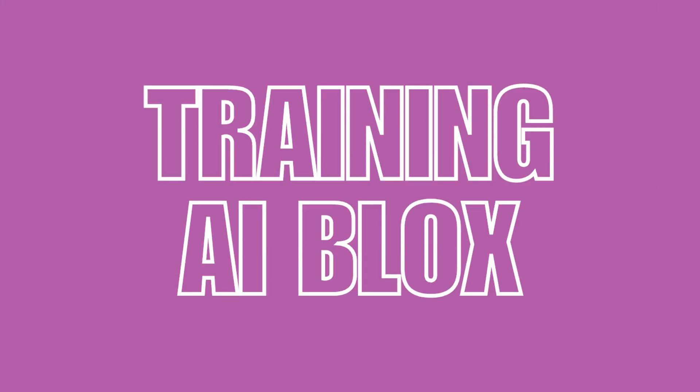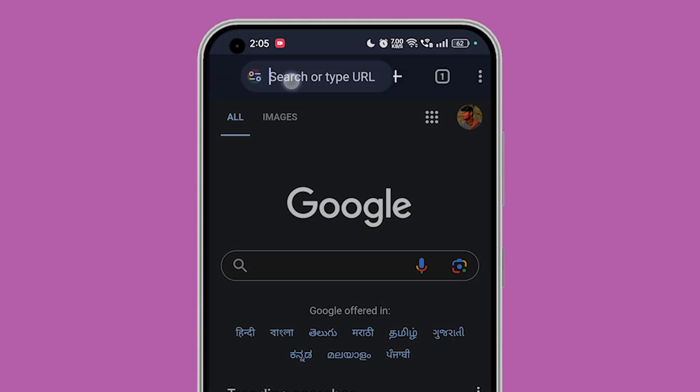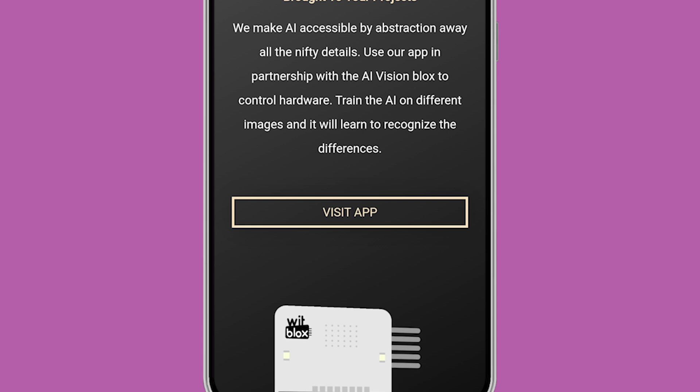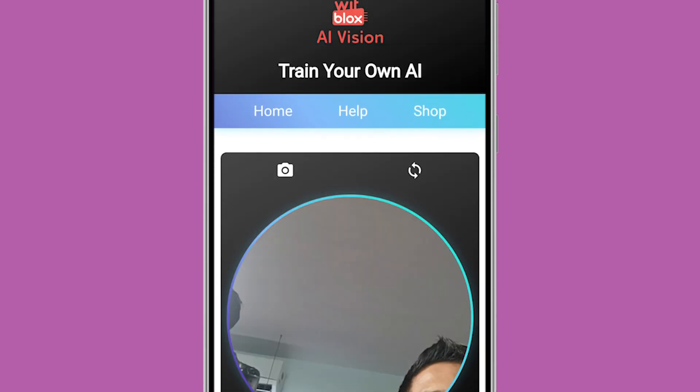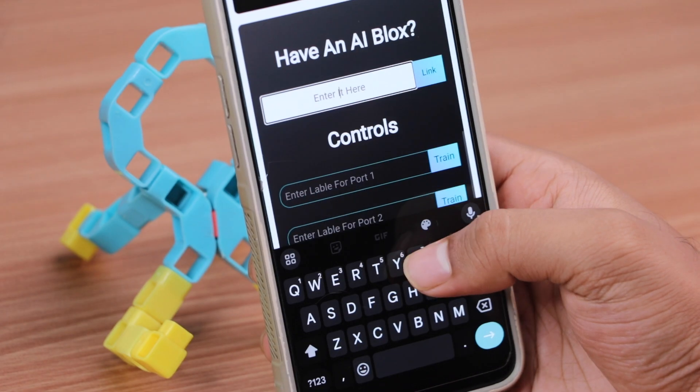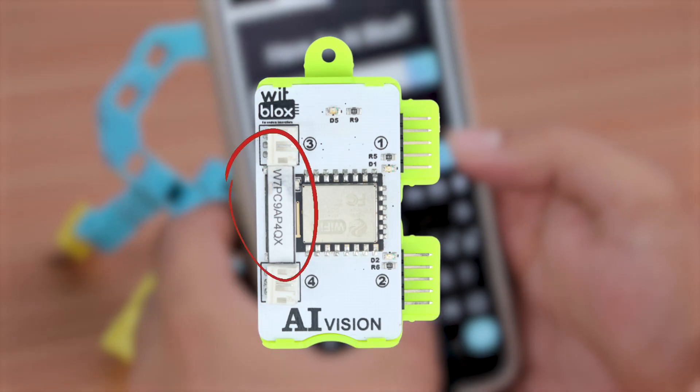Now comes the AI model training part. Go to ai.wipblocks.com. Click on the visit app option and allow all authorizations. Now click on the train option. Enter the unique code on your AI blocks and click link.